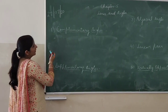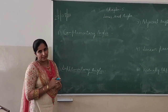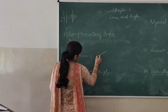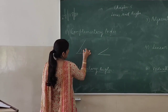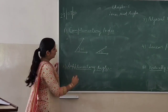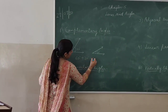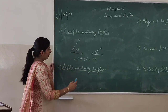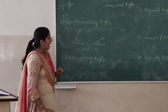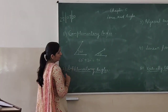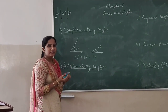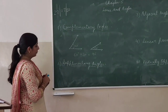Now we will discuss some related angles. The first is complementary angles. Let us take two angles — suppose one is 60 degrees and the other is 30 degrees. If we add these two angles, the sum is 90 degrees. So if two angles have a sum of 90 degrees, they are known as complementary angles, and one angle is the complement of the other. So 60 degrees is the complement of 30 degrees, and 30 degrees is the complement of 60 degrees.